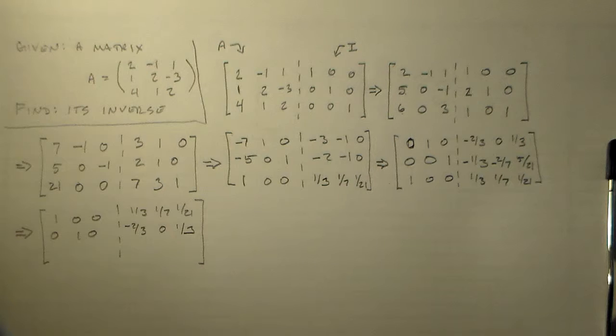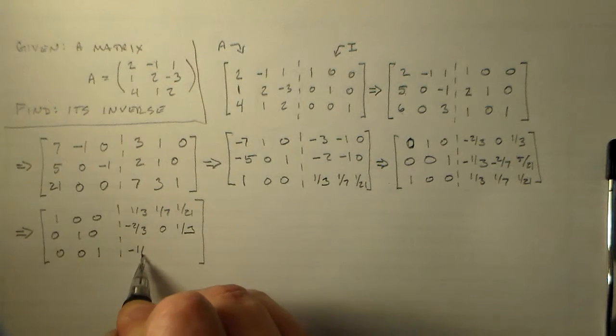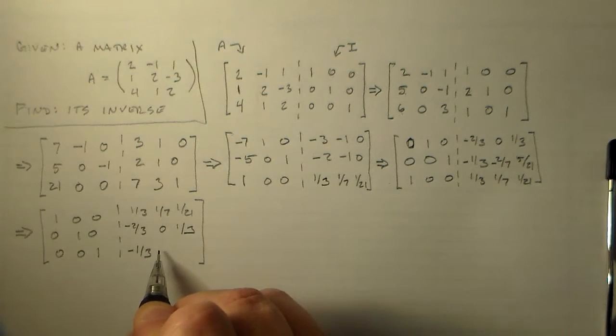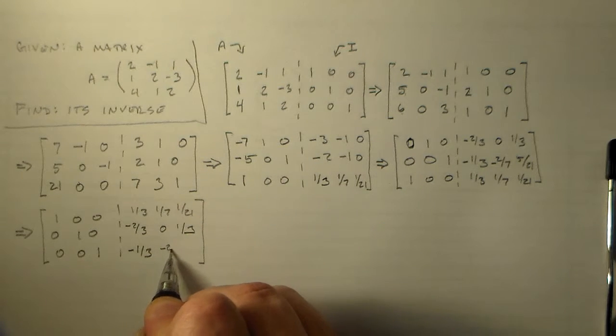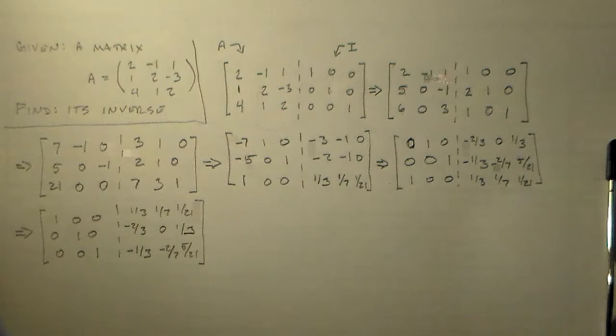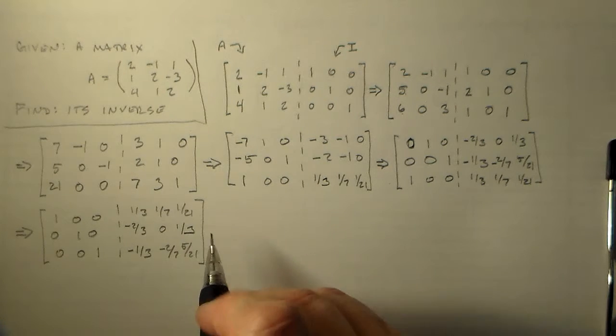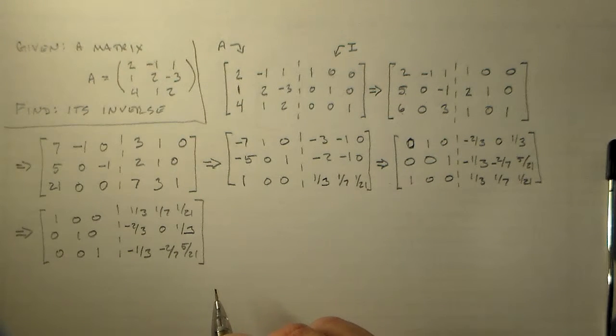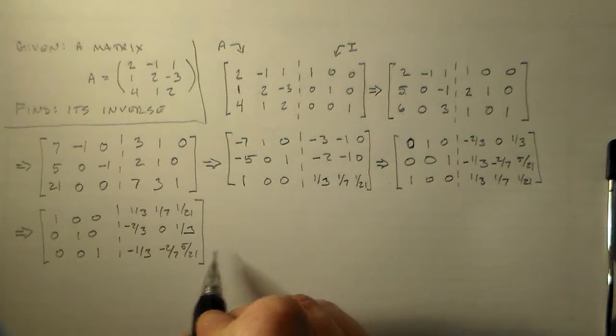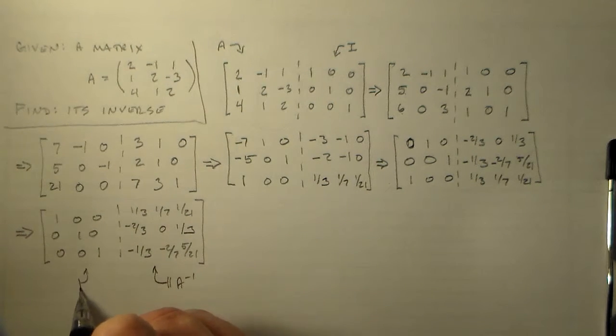0, 1, 0, which is minus 2 thirds, 0, 1 third. And then we have 0, 0, 1, which is minus 1 third, minus 2 sevenths, and 5 twenty-firsts. That would mean that this is our A inverse because this is I.